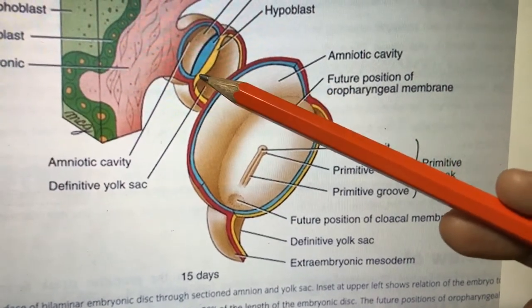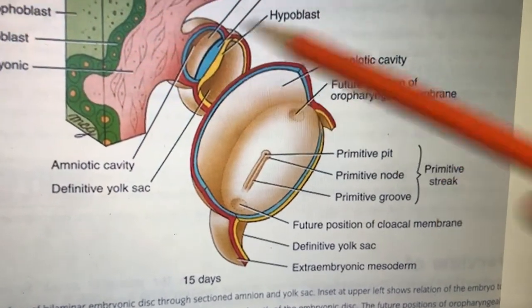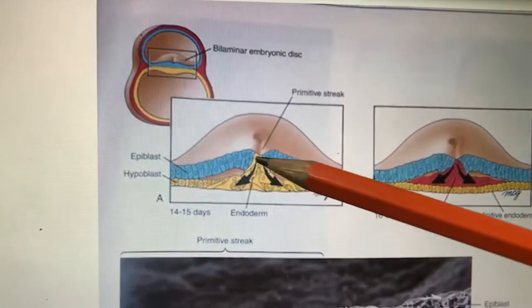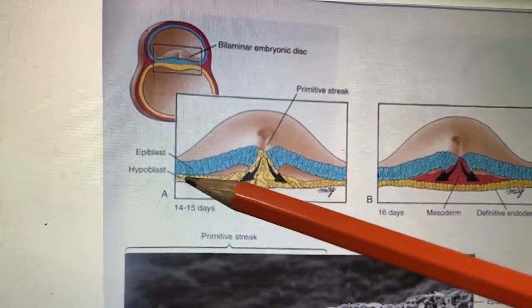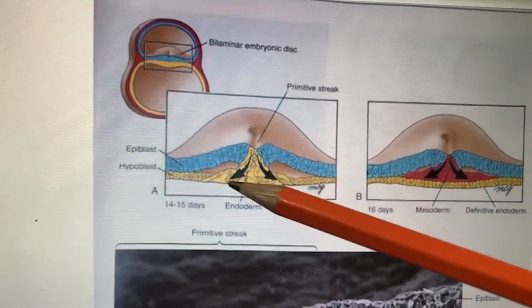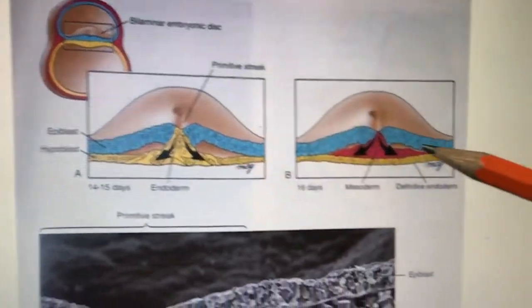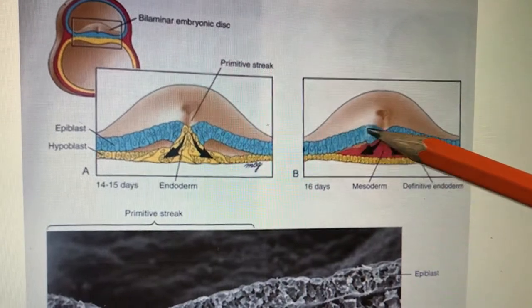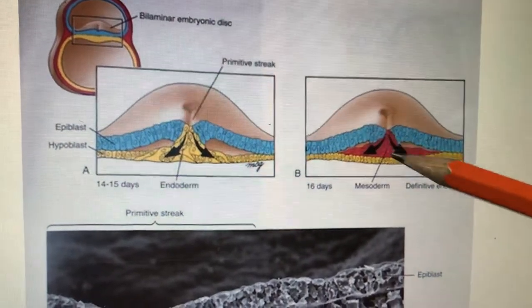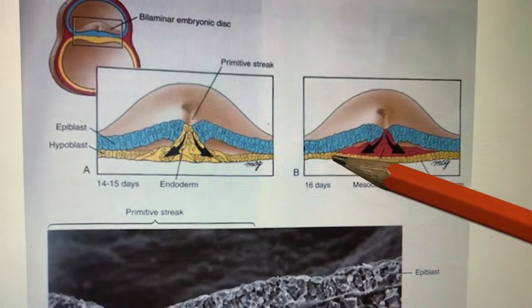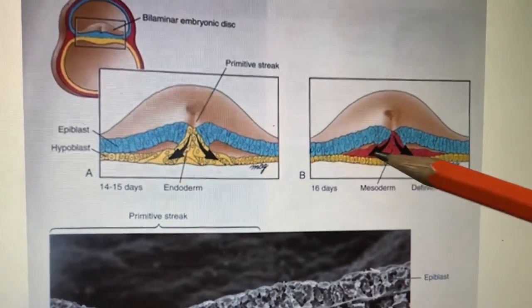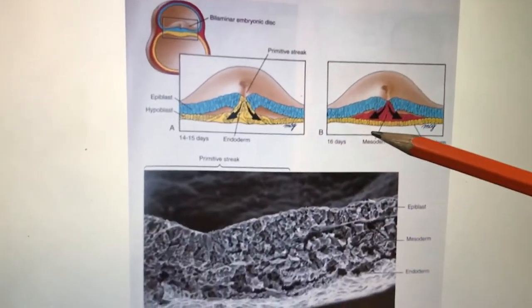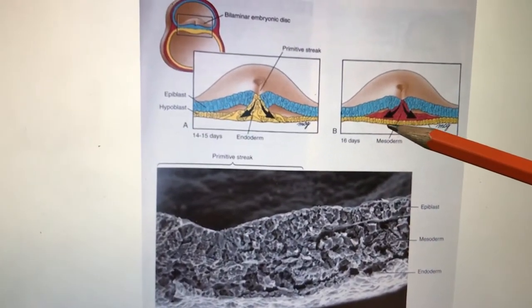Epiblastic cells enter through the primitive groove and go beneath to form an in-between layer called mesoderm. They also displace the hypoblast layer — this displaced layer is called endoderm. The middle layer is mesoderm. So: the blue-colored outer epiblast transforms into ectoderm; the deep yellow hypoblast transforms into endoderm; and the new red middle layer is mesoderm. This is the trilaminar germ disc formation, otherwise called gastrulation.